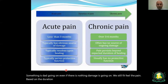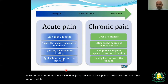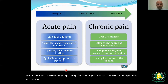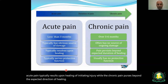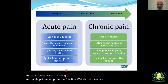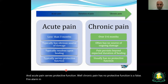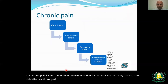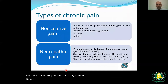Based on duration, pain is divided into acute and chronic. Acute lasts less than three months while chronic lasts over three to six months. Acute pain has an obvious source of ongoing damage while chronic pain has no source of ongoing damage. Acute pain typically resolves upon healing of the initiating injury, while chronic pain persists beyond the expected duration of healing. Acute pain serves a protective function, while chronic pain has no protective function — it's like a false fire alarm.